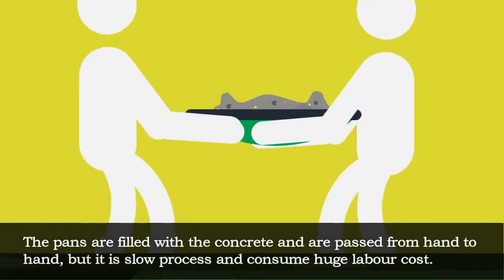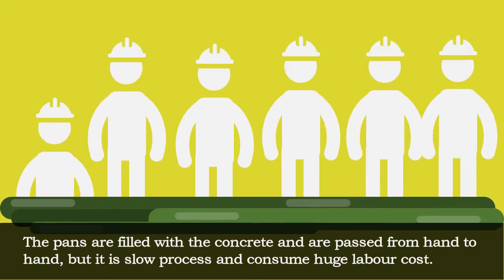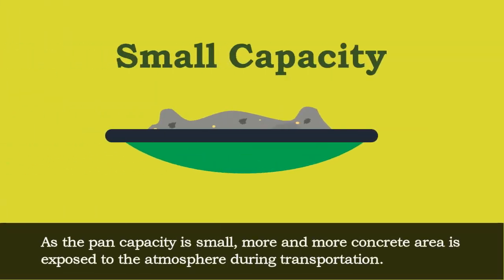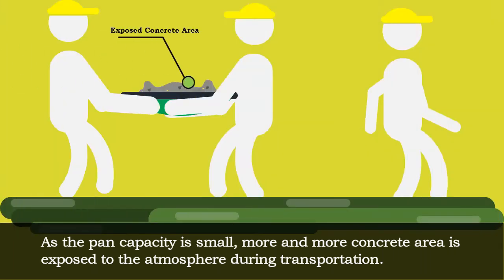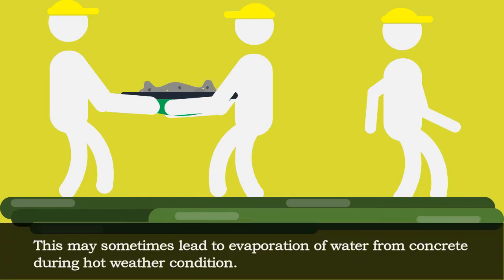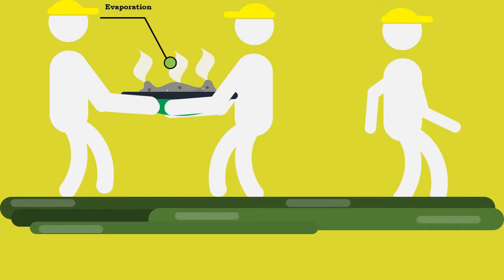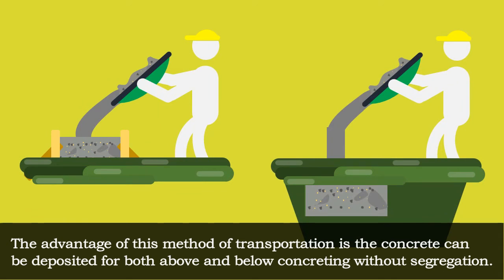Mortar pan is the common method of transporting concrete. The pans are filled with concrete and passed from hand to hand, but it is a slow process and consumes huge labor cost. As the pan capacity is small, more concrete area is exposed to the atmosphere during transportation, which may sometimes lead to evaporation of water from concrete during hot weather conditions. The advantage of this method is that concrete can be deposited both above and below grade without segregation.